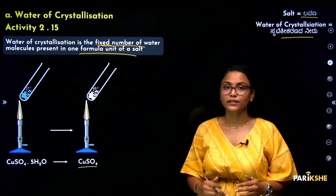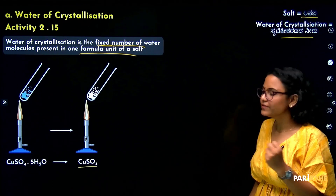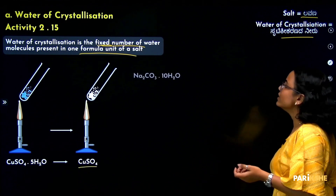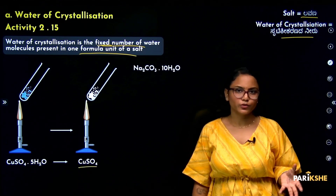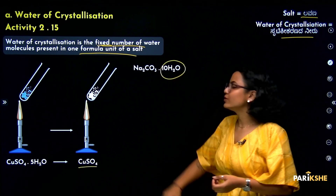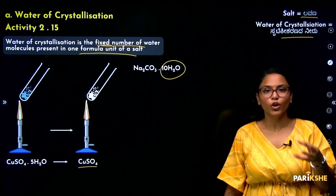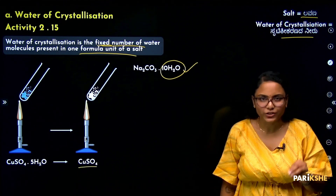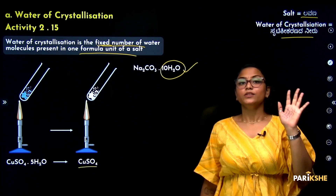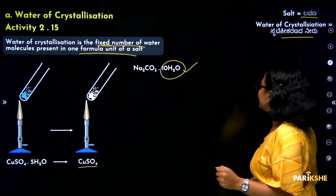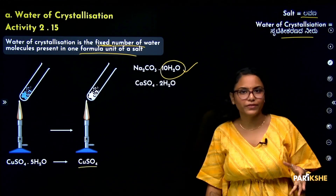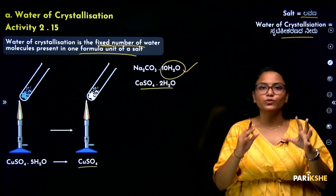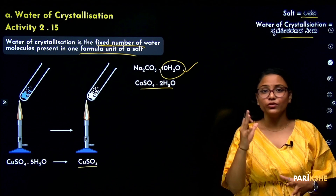This is also covered in the last video: washing soda's chemical name is sodium carbonate, Na₂CO₃·10H₂O — it has 10 molecules of water as water of crystallization. Calcium sulphate has 2 molecules of water as water of crystallization.